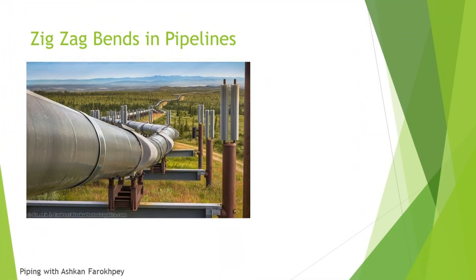A tangible example of how bends help piping engineers in controlling thermal expansion and its loads is zigzag bends that are used in above-ground pipeline systems. As you can see in the picture, while it was easily possible to construct a pipeline in an absolutely straight route, bends are deliberately added to the pipeline to dampen the loads applied to the system due to thermal expansion and contraction. I'll prepare a video on the calculations of SIF and flexibility characteristics of different piping fittings, which will help you better understand the concept behind it.